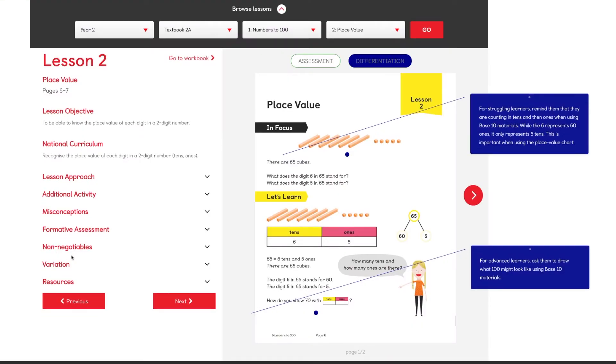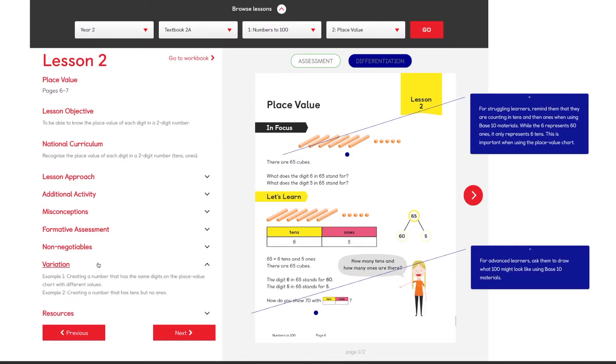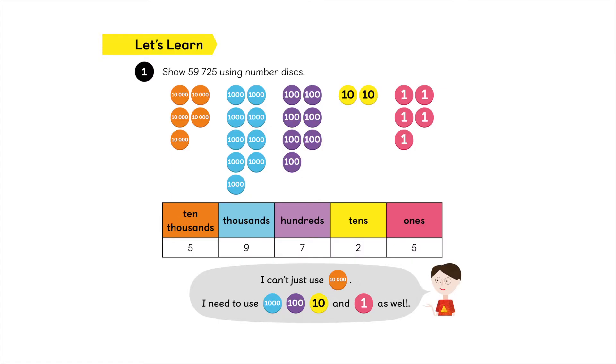I do look through the textbook. I also look at the online teacher planning, because of the variation and the differentiation that's broken down so carefully. But the first thing in choosing concrete materials, the first thing I will look at is what concrete materials are represented in the Let's Learn. If there is a picture of some number discs in the Let's Learn, I would expect them to use them in the anchor task, just to make that connection, because the Let's Learn should be so closely connected to everything that comes out in the anchor task.